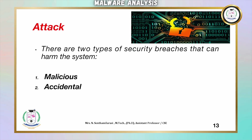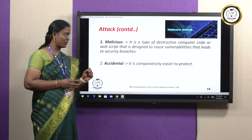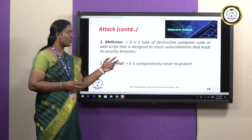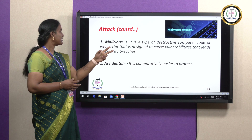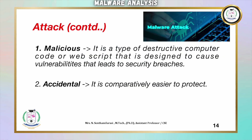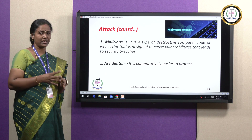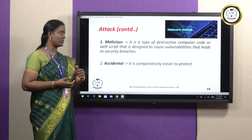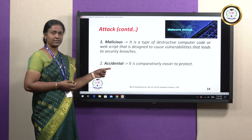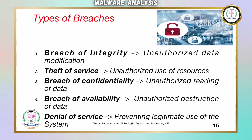There are two types of security breaches that can harm our system: malicious and accidental. Malicious refers to destructive computer code or web scripts designed to cause vulnerabilities — flaws in code that lead to security breaches, breaking the security of the system. Accidental breaches are comparatively easier to protect against.